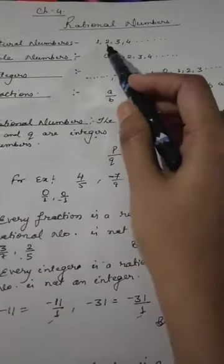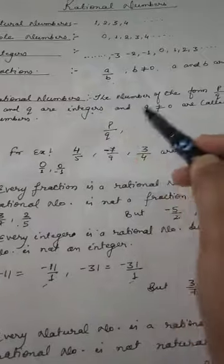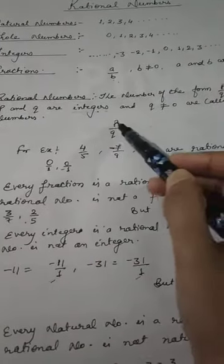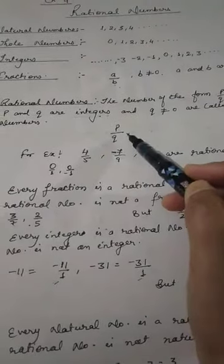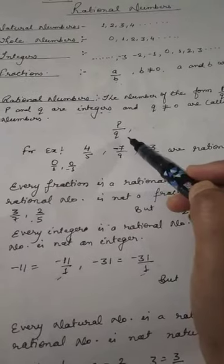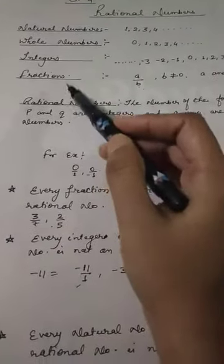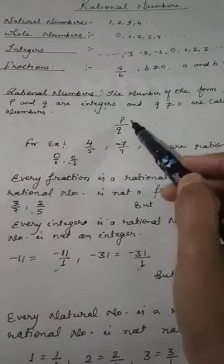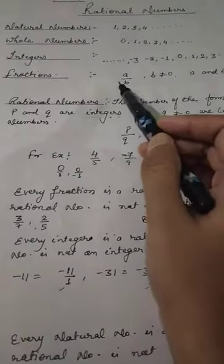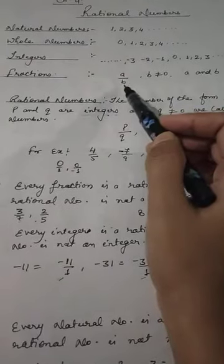In rational numbers, p and q are integers, so the numerator and denominator can be negative or positive numbers. So fractions and rational numbers have a big difference: rational numbers can be expressed in negative form, but fractions cannot — fractions will always be positive.